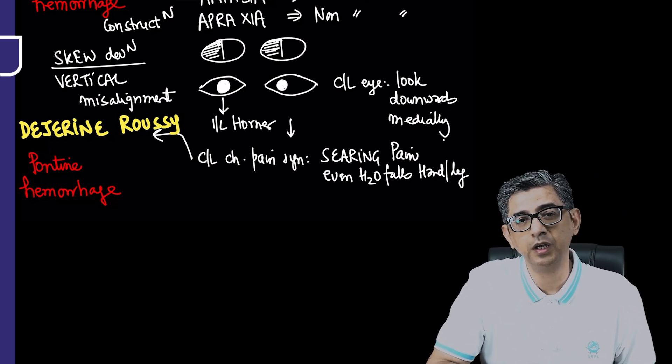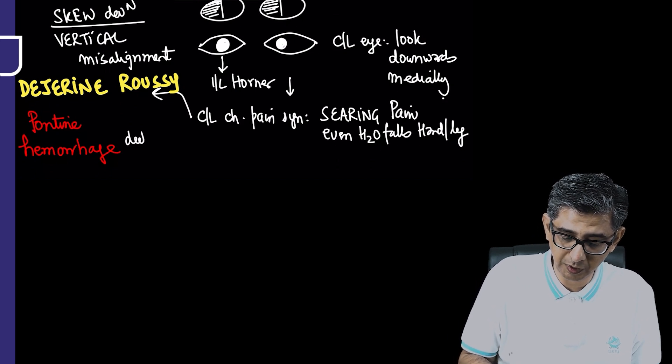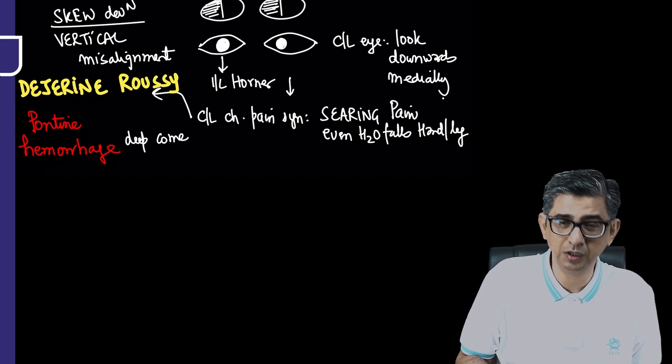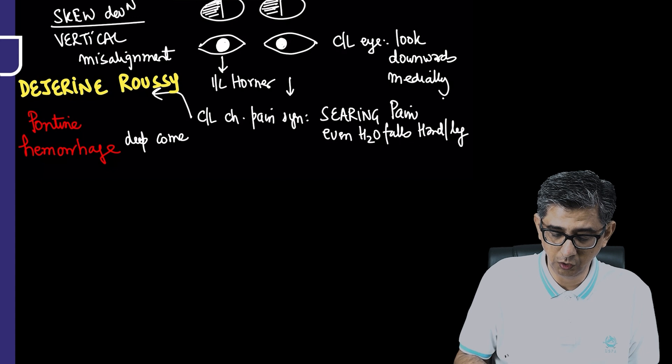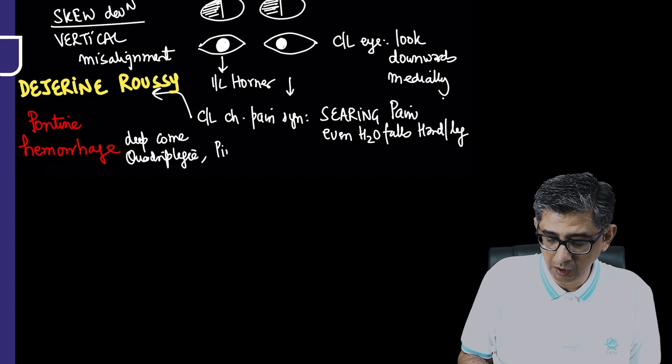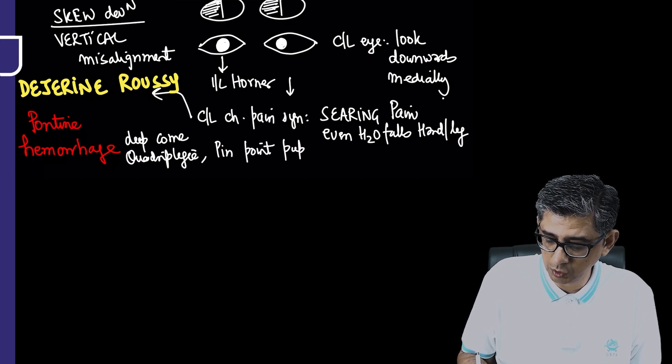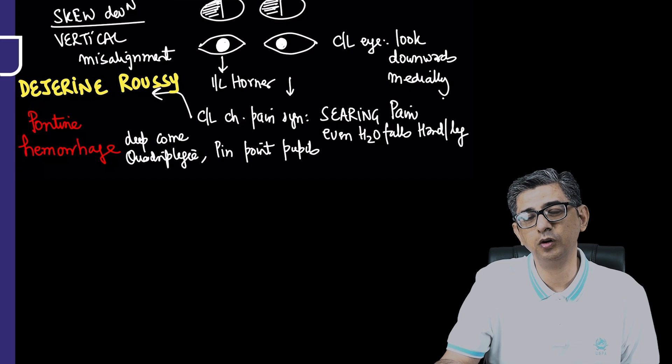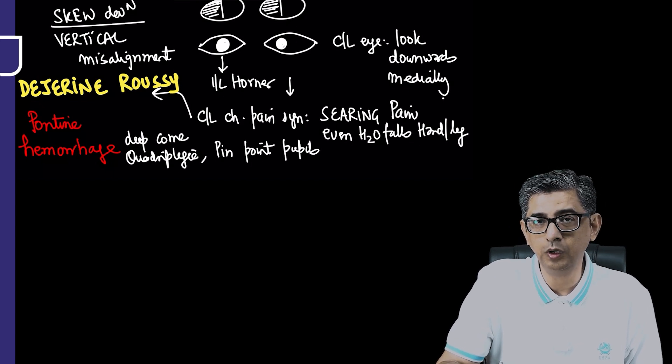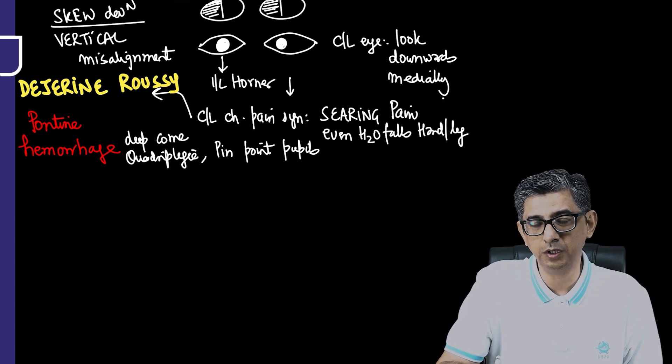Pontine hemorrhage has even worse prognosis. The person deteriorates much faster. You read about deep coma, development of quadriplegia, and pinpoint pupils reacting to light. Most questions with pinpoint pupils make you think of drug overdoses or pontine stroke. The differentiating feature clinically is respiratory rate.